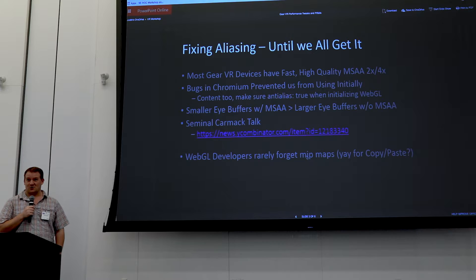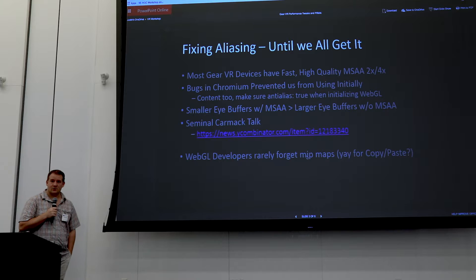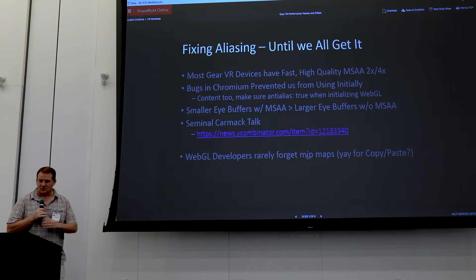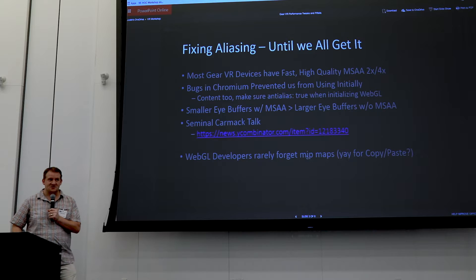We ripped those bugs out, reported back to Chrome that everything looks good and nothing's crashing. We highly recommend always turning anti-aliasing to true on your WebGL rendering context. Smaller index buffers can compensate for the performance increase. Carmack also gives an entire talk about it, and one of the things he rails on is mipmaps — though we actually find that WebGL developers copy-paste the proper mipmap code 100% of the time.